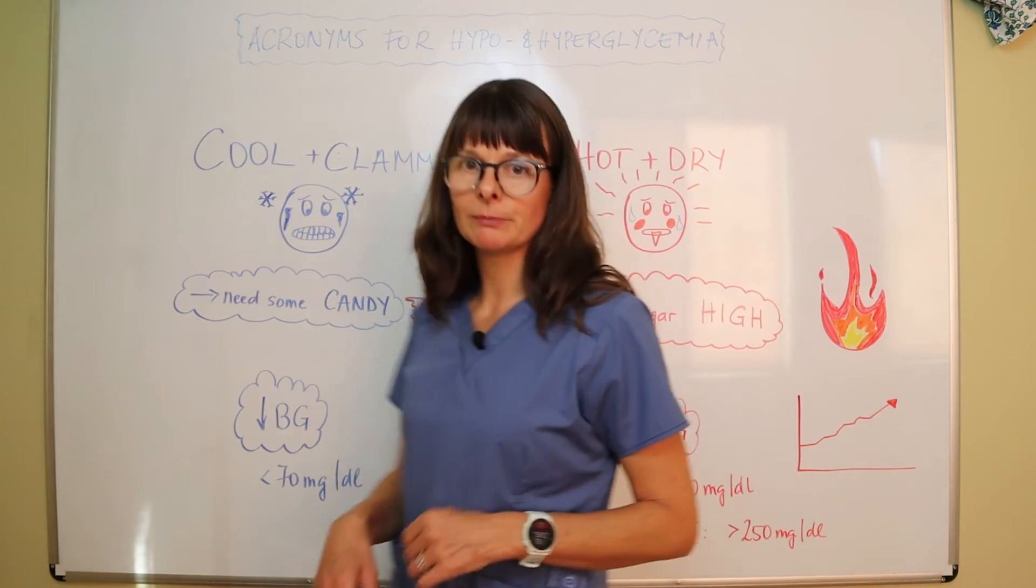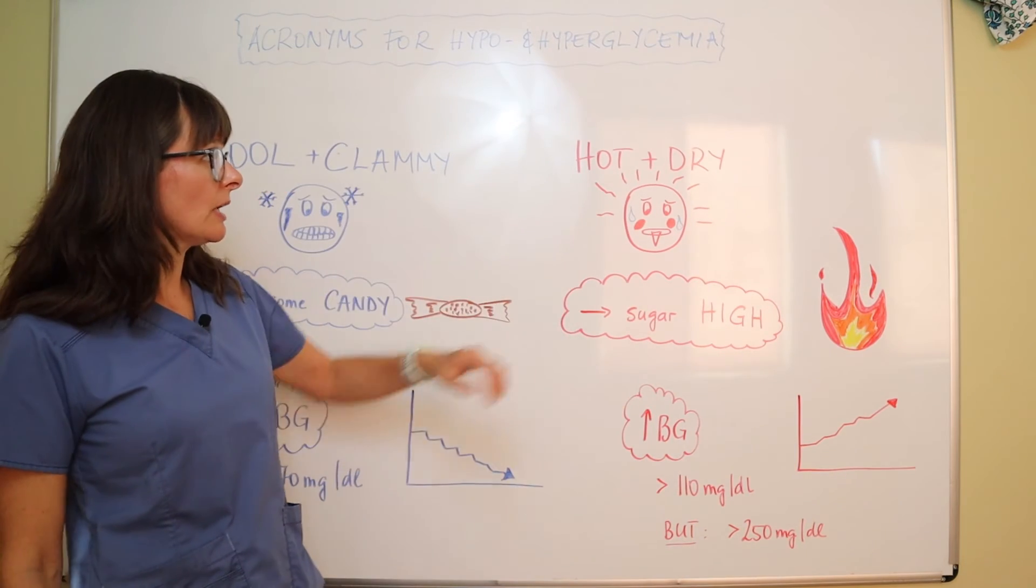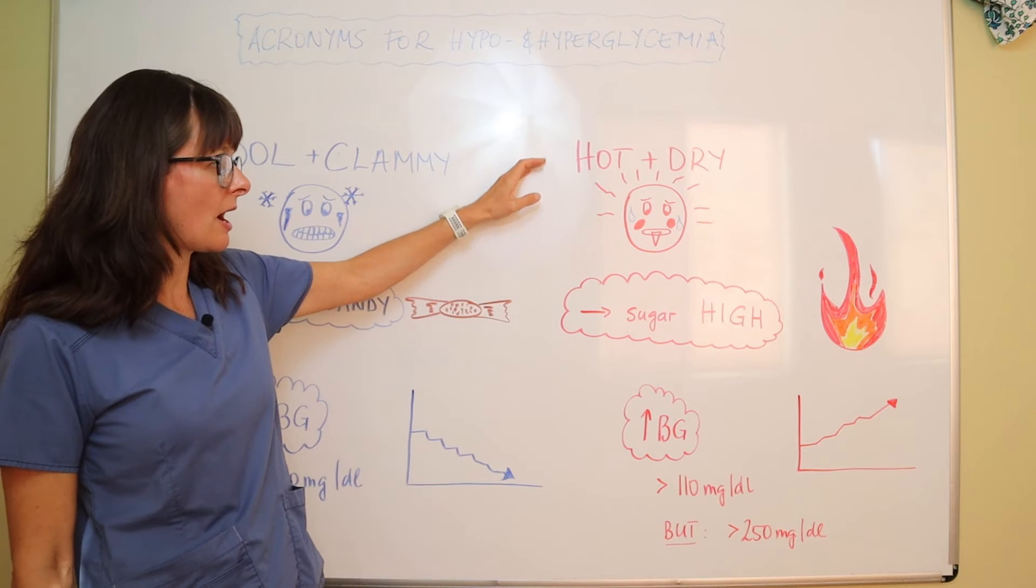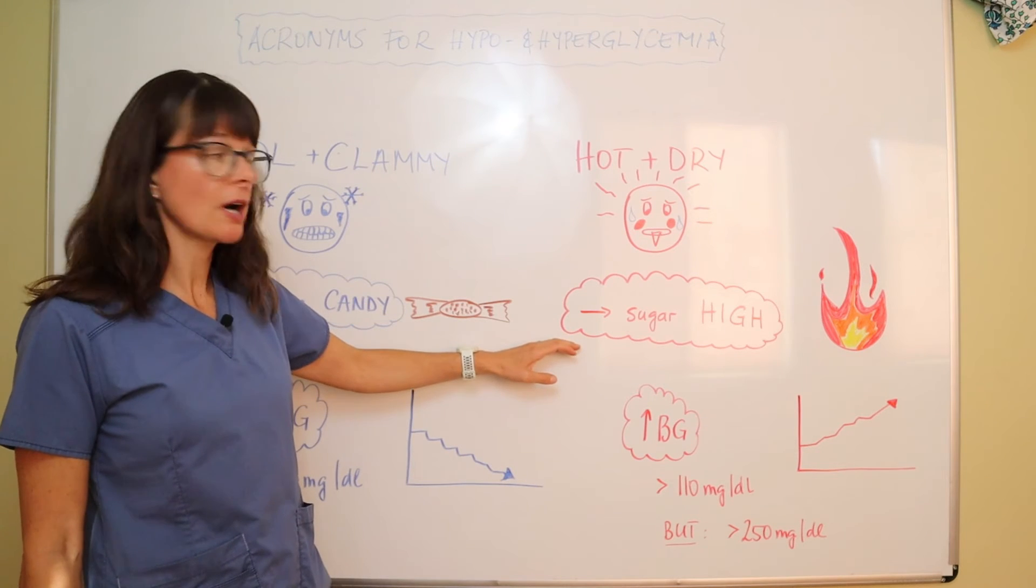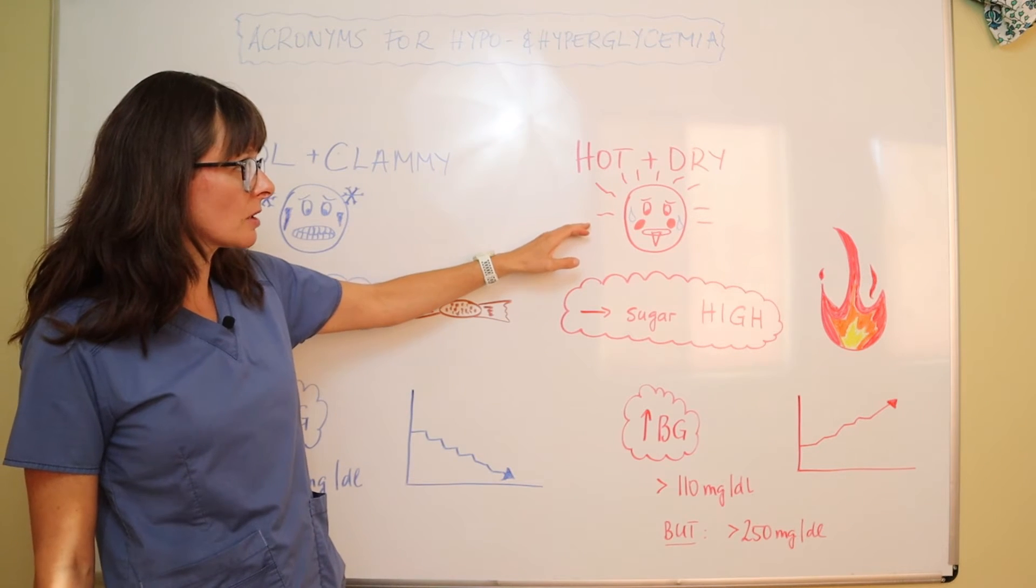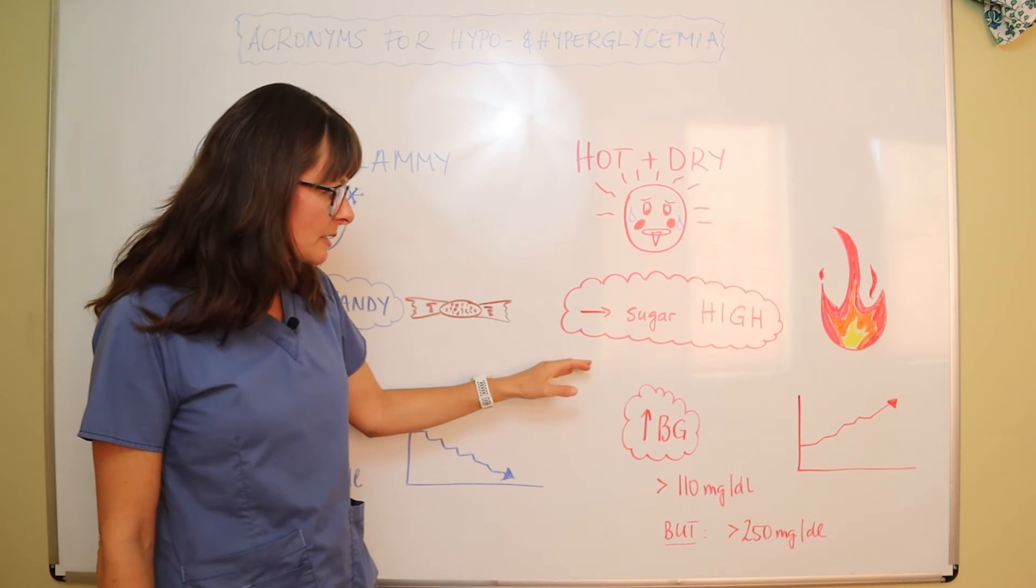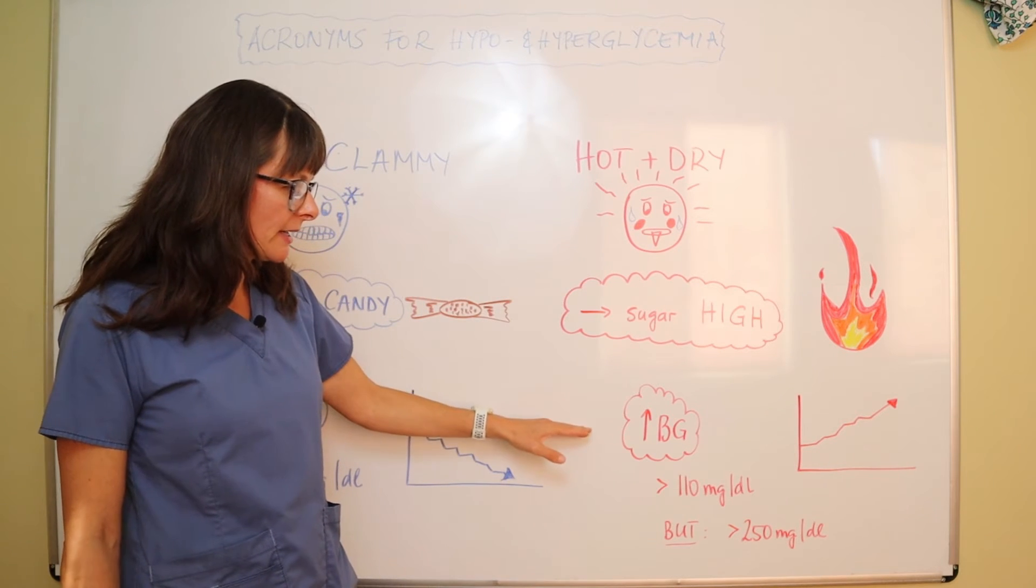On the other side, we have hot and dry means sugar high. So this poor guy here is all sweating, he's all hot, he's got the flame, his blood sugar is elevated.